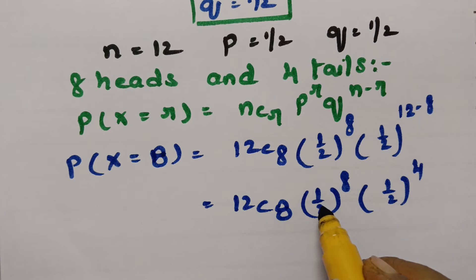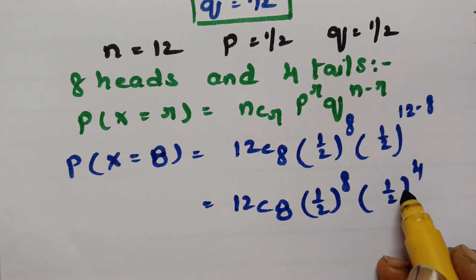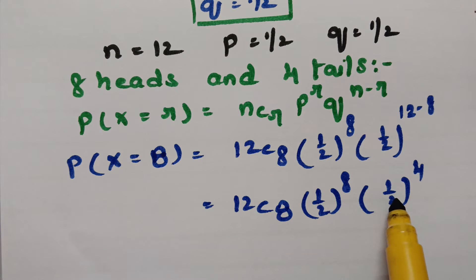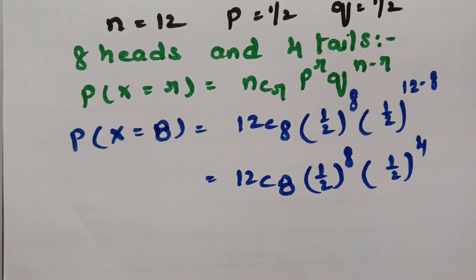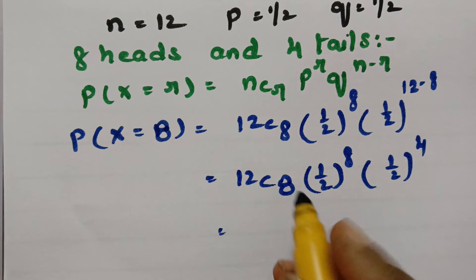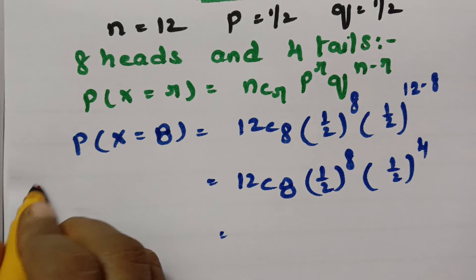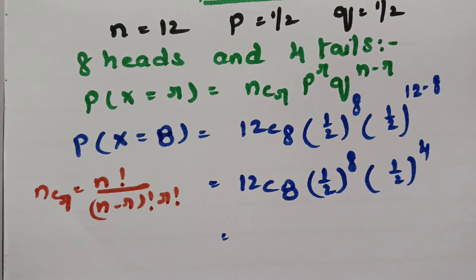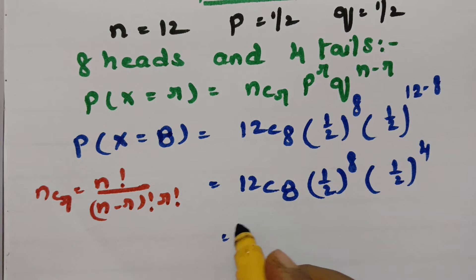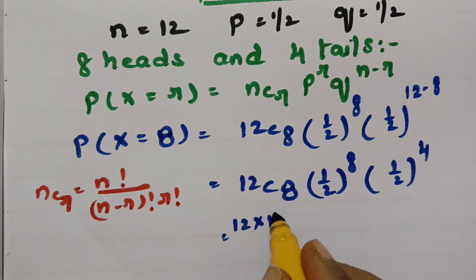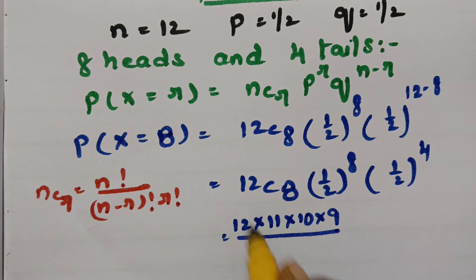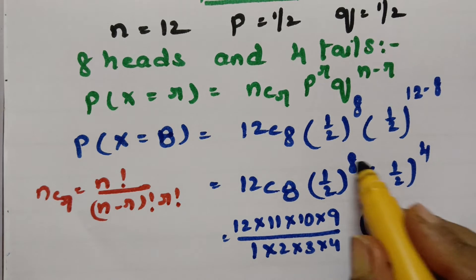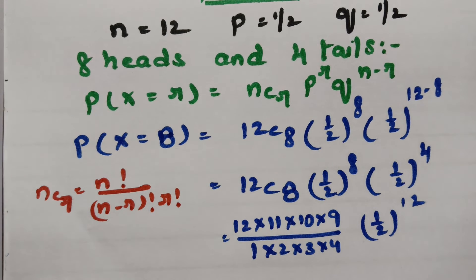So the expression is 12C8 times (1/2) to the power of 8 times (1/2) to the power of 4. Half to the power 8 gives the probability of getting 8 heads, and half to the power 4 gives the probability of getting 4 tails. Using the formula NCR = N! / ((N−R)! × R!), that is 12 into 11 into 10 into 9, divided by 1 into 2 into 3 into 4, times (1/2) to the power 12.